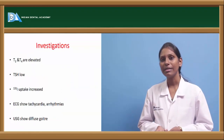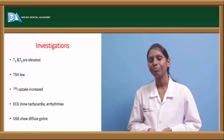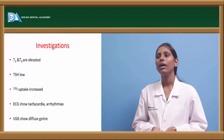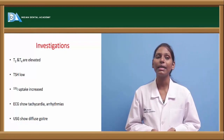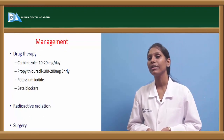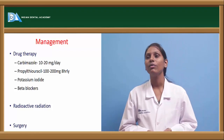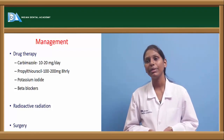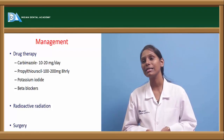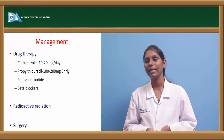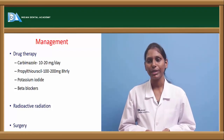Investigations for hyperthyroidism show elevated T3 and T4, low TSH, and increased iodine-131 uptake. ECG shows tachycardia and arrhythmias, and ultrasound shows diffuse goiter. Management involves drug therapy: carbimazole 10–20 mg daily, potassium iodide, beta blockers, and propylthiouracil 100–200 mg 8-hourly to control hyperthyroidism.